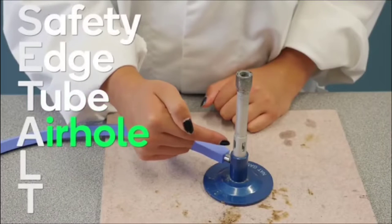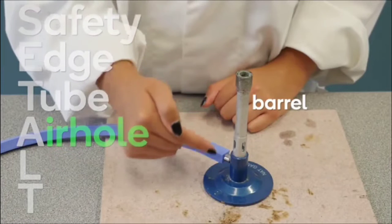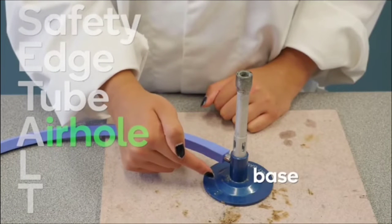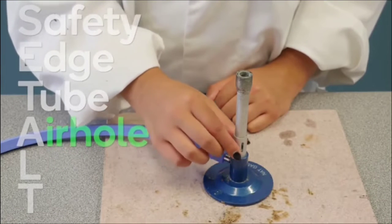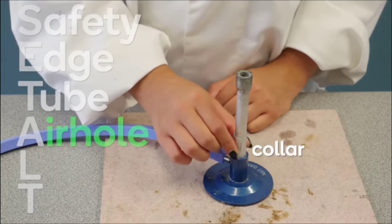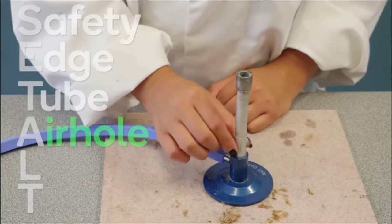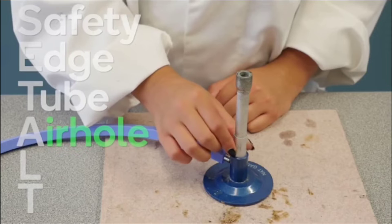A is for air hole. The air hole is located at the bottom of the barrel, near the base. It can be opened or closed by turning a metal ring called the collar. This controls the amount of air and oxygen that mixes with the gas.